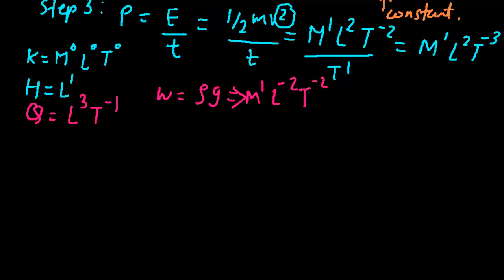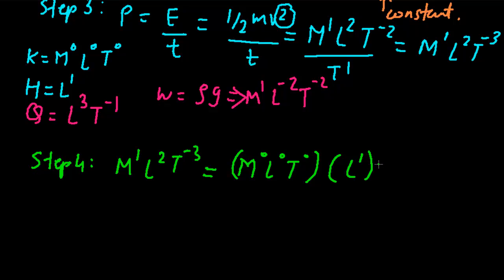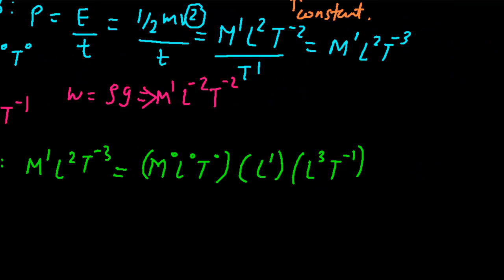Step 4: We will replace power with its dimension. M¹L²T⁻³ equals M⁰L⁰T⁰ times h would be L¹, q would be L³T⁻¹, and w would be M¹L⁻²T⁻².